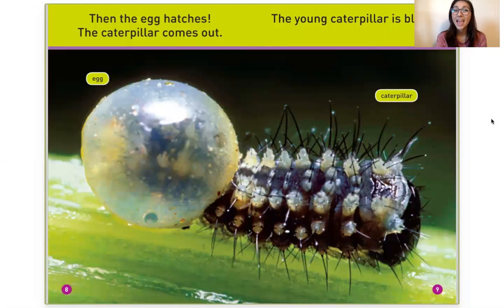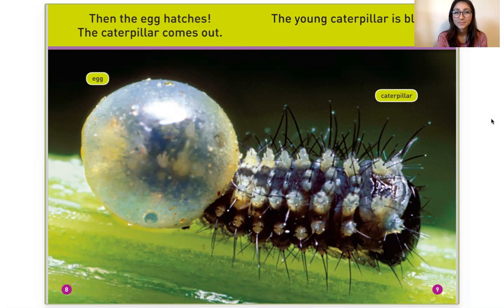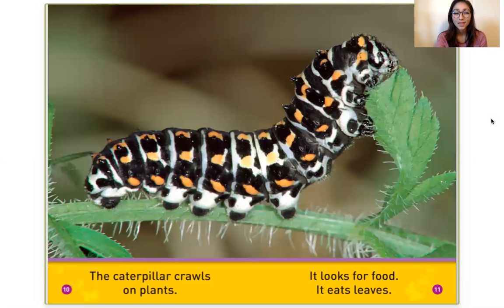Then the egg hatches. The caterpillar comes out. The young caterpillar is black. The caterpillar crawls on plants. It looks for food and it eats leaves.